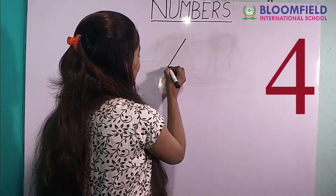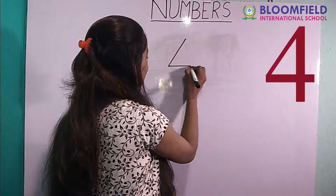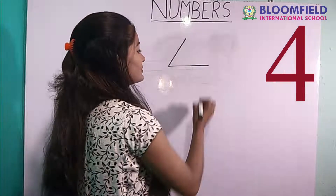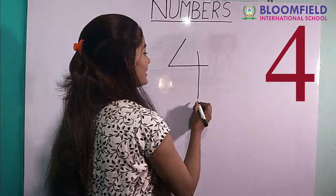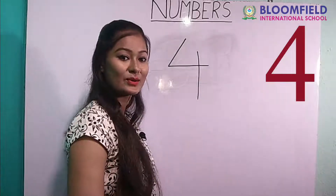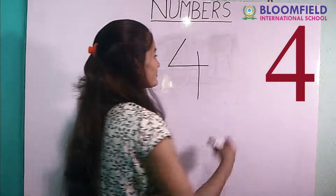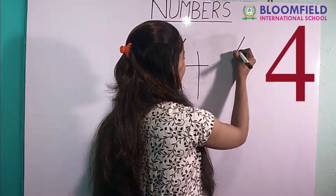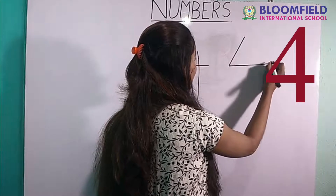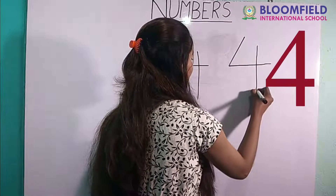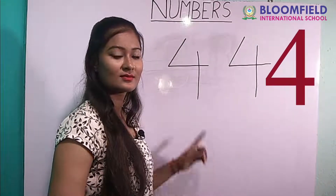Next: slanting line, one sleeping line, one standing line. Good. Four. Slanting line, then sleeping line, standing line. Four.